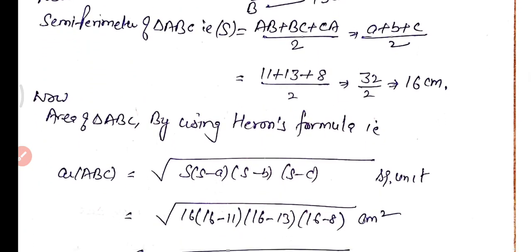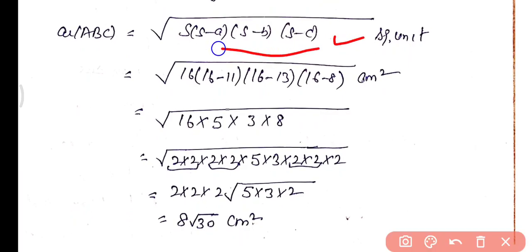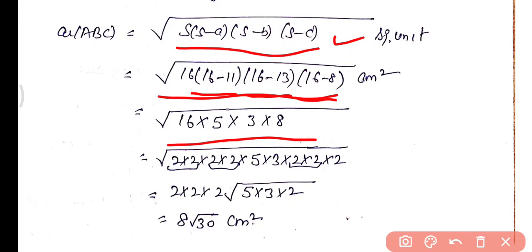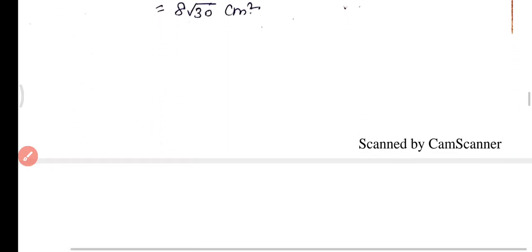So the semi-perimeter is 16 cm. Now the area of triangle ABC by Heron's Formula is under the root of S into (S minus a) into (S minus b) into (S minus c). Putting the values: root of 16 into (16 minus 11) into (16 minus 13) into (16 minus 8), which gives root of 16 × 5 × 3 × 8. After prime factorization, we get 8√30 cm². Thus area of triangle ABC equals 8√30 cm².